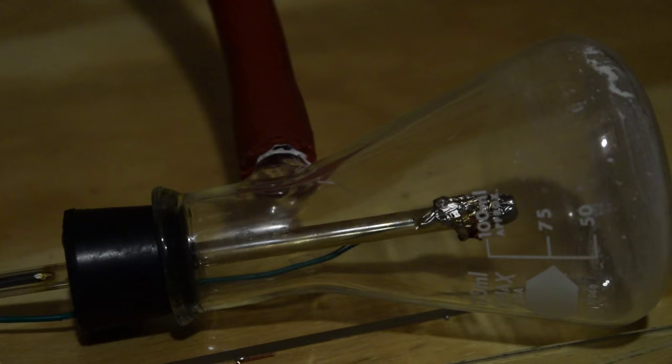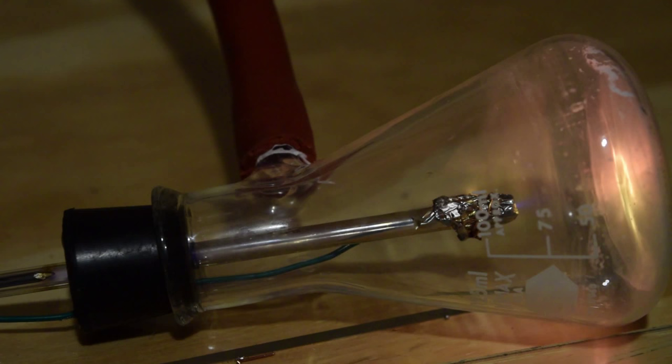Here's a shot of the cathode ray tube with all the lights turned off. It's even more impressive in the dark. This is running at only 2,000 volts DC, so when I turn it up to 15,000, you can see the glow becomes very intense.